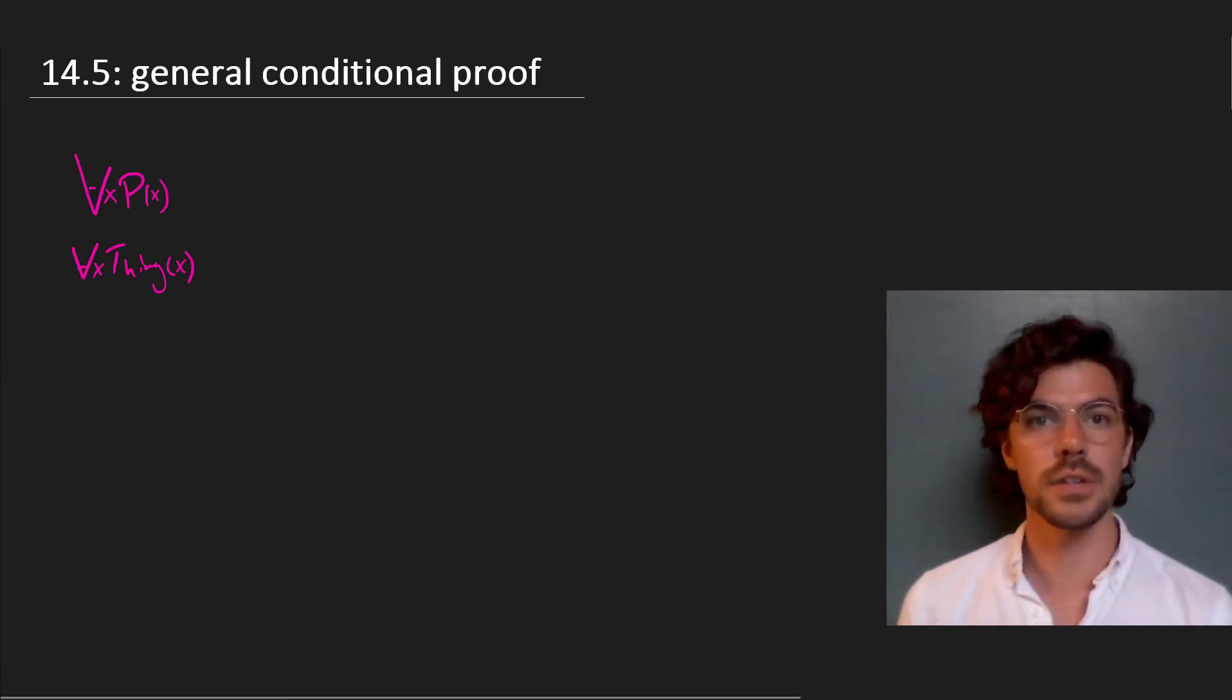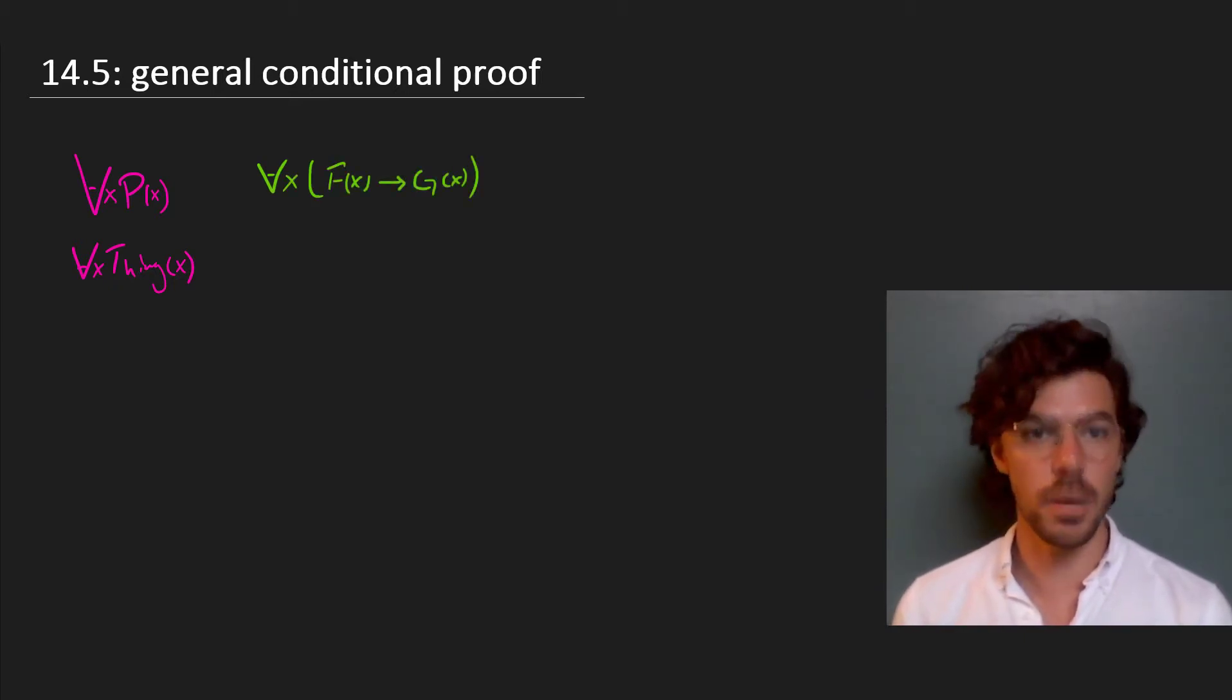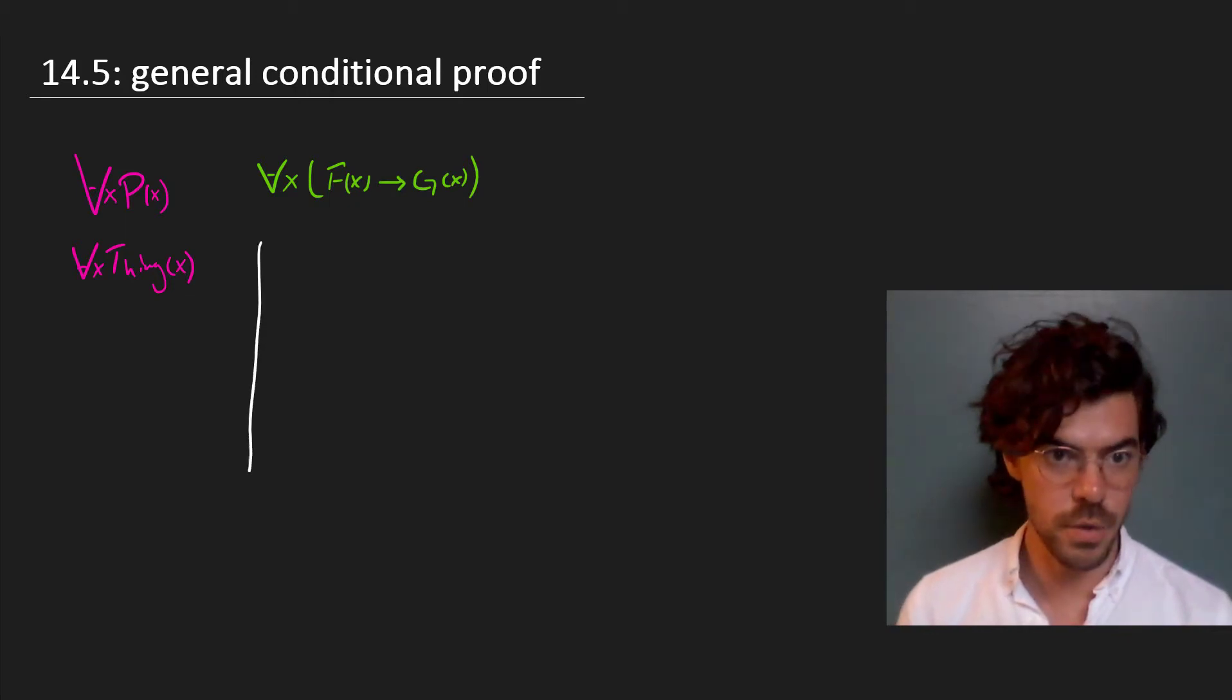What we want to be able to do is to make proofs of conditional statements of the form every F is a G. And we do this by making use of our arbitrary names again. So suppose that we want to prove that all F's are G's.